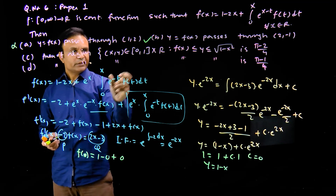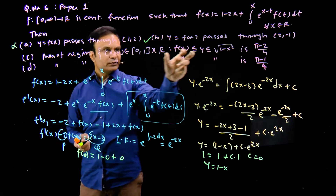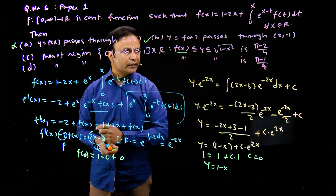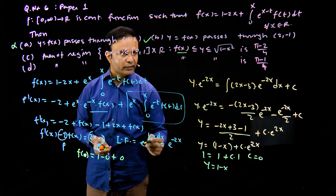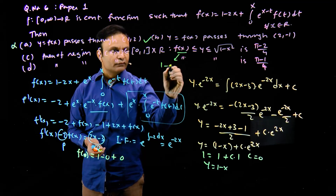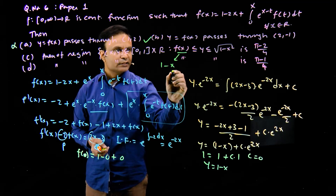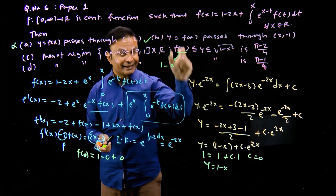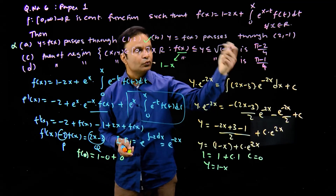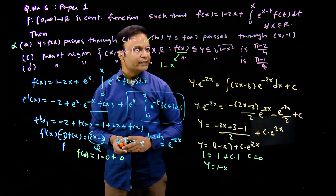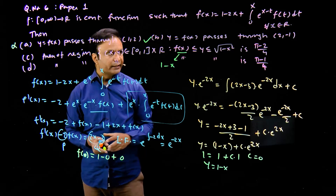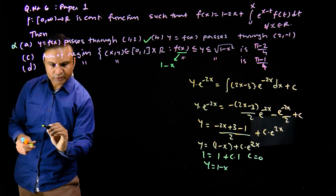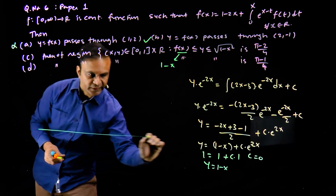Next, we need to find the area of the region defined by the inequality. Since f(x) = 1 - x, we now have the inequality: 1 - x ≤ y ≤ √(1 - x²). We plot these inequalities on the coordinate axis to find the required area.